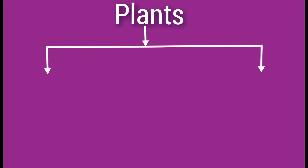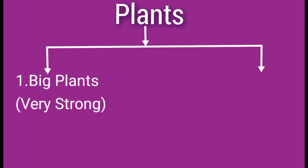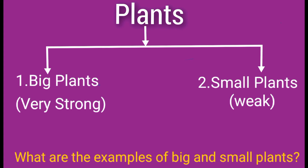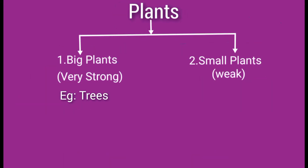Based on different kinds of stems, plants are of two types. The first one is big plants, which are very strong, and the second one is small plants, which are weak. Examples of big plants are trees. Examples of small plants are shrubs, herbs, climbers, and creepers.